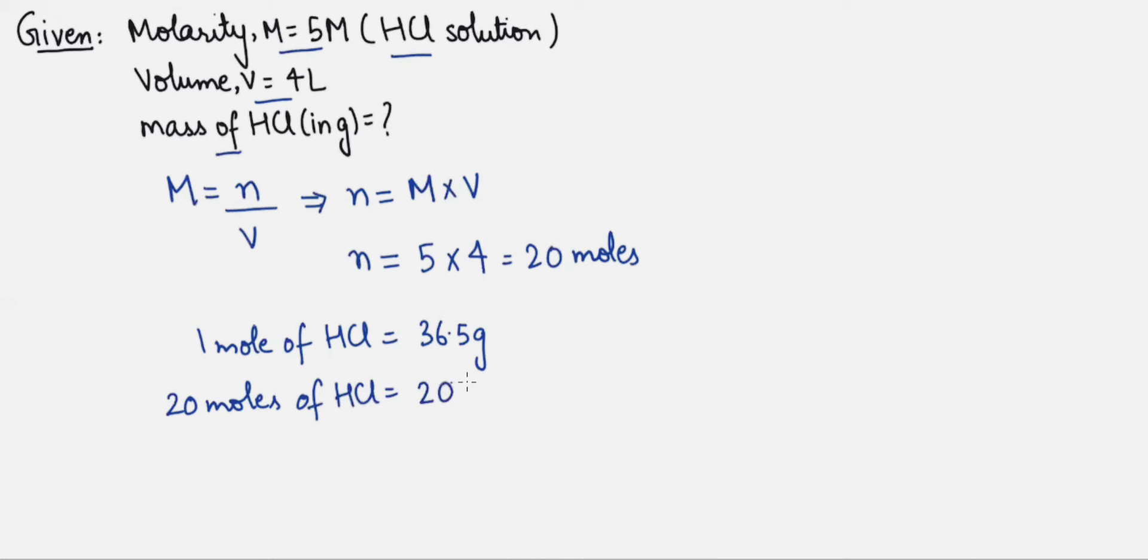have 20 multiply 36.5 grams, and this gives the value of 730 grams HCl. So to prepare the solution of molarity as 5 moles per liter and volume 4 liters, we need 730 grams HCl.